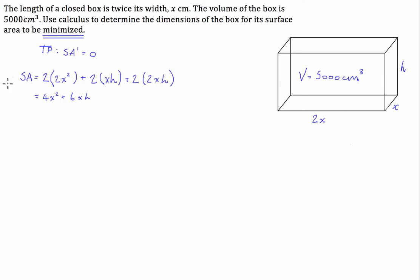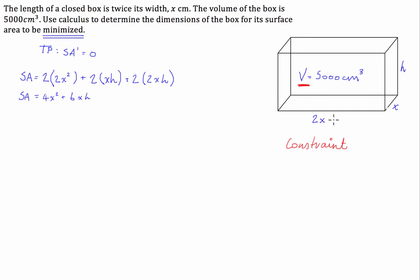The issue is that if we're going to try and differentiate this surface area equation, we've got two variables. We can't differentiate with respect to two variables and get a specific value of x. We've got a constraint function placed upon us by the fact that the volume has to be 5,000 centimetres cubed. This acts as a constraint — it's stopping us making the box infinitely bigger. All dimensions have to give a volume of 5,000, so there are only a specific set of values these numbers can take.